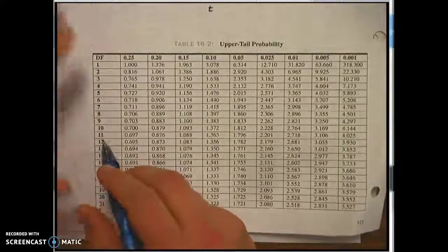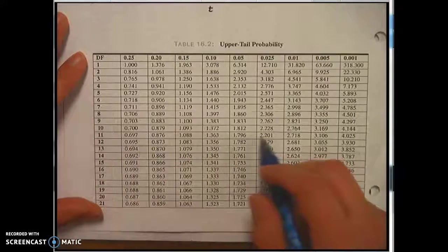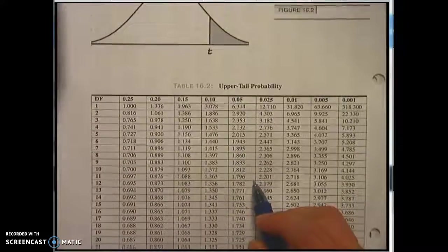In our case we had 11 degrees of freedom. So I'm looking at 11 here and I'm going to pick a significance level.